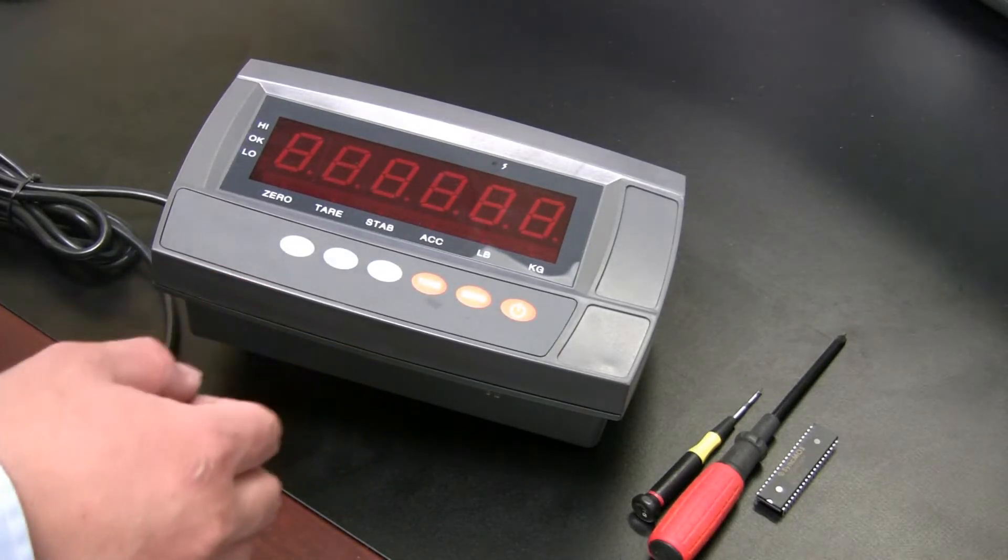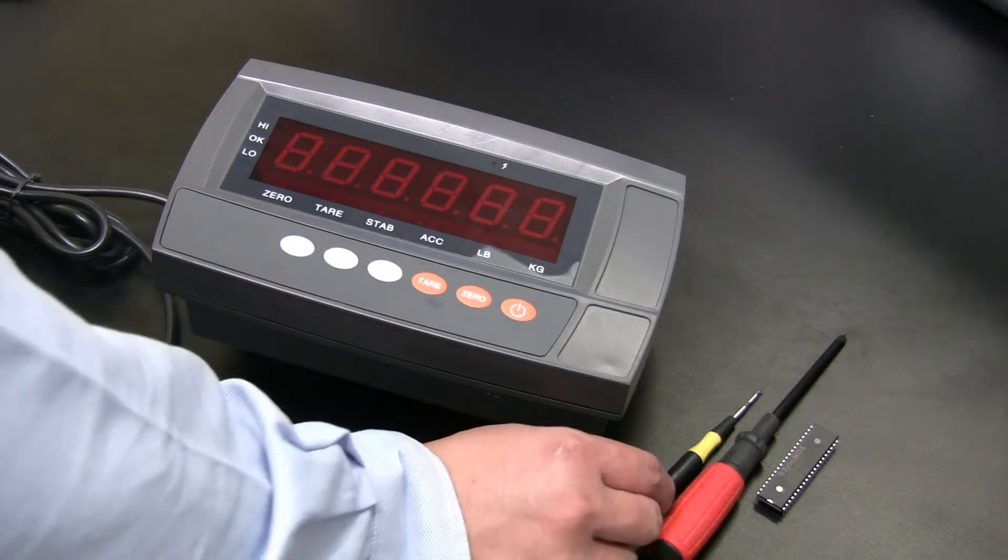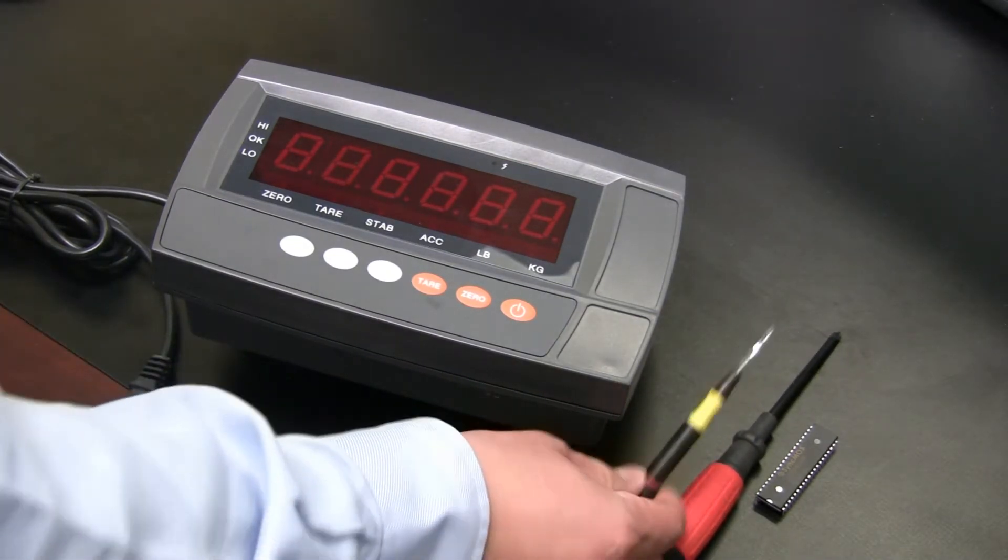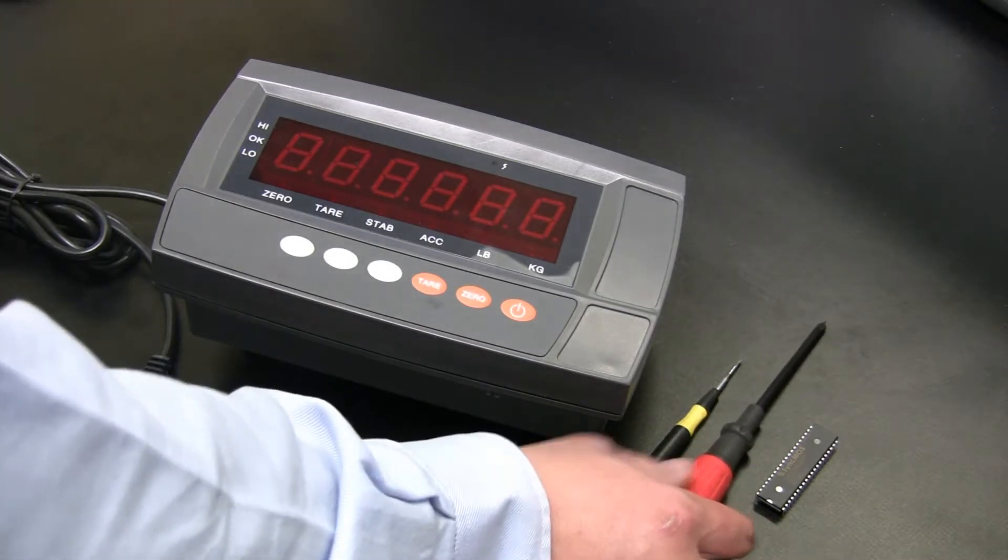To replace a chipset for a 102E is quick and easy. The tools you need are a Phillips screwdriver and a tiny flat head screwdriver along with a new chipset.